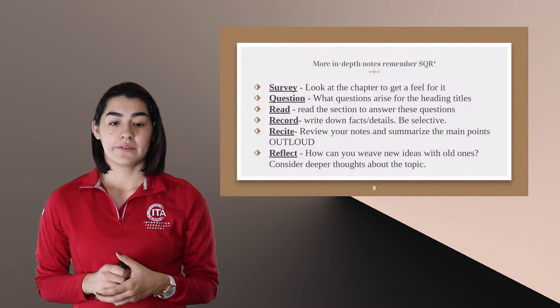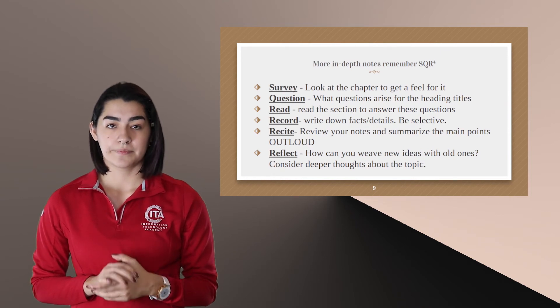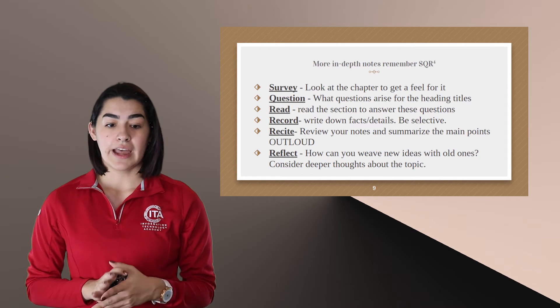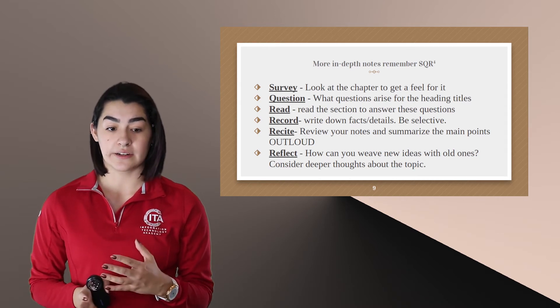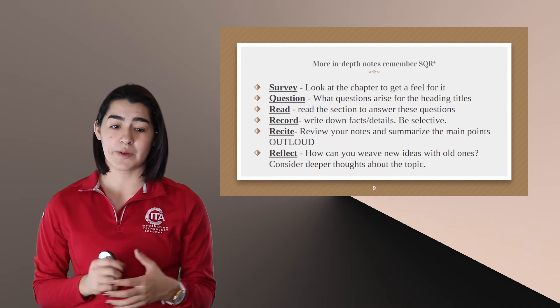The second way of reading a textbook is more in depth, and it's called SQR to the fourth. So you're going to survey, look at the chapter to get a feel for it. And then you're going to come up with questions that arise from the heading titles. And then you're going to read the section to answer those questions.